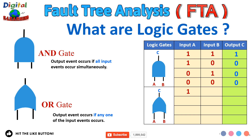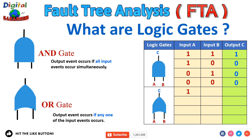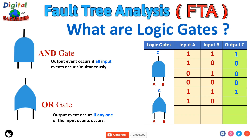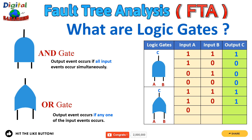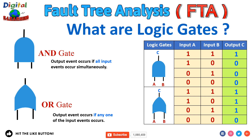For the OR gate, the condition says that if any one of the inputs is present, we get the output. So if we have input at A and input at B, we get output C. If we have input at A but not at B, we still get output C. If we don't have input at A but have input at B, we get output C. But if we don't have input at either A or B, we will not get any output. This is how we apply logic gates for AND and OR.